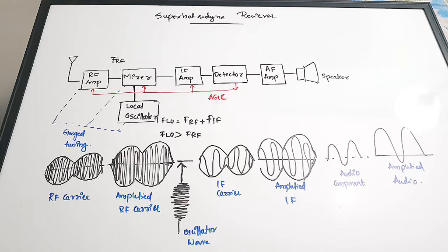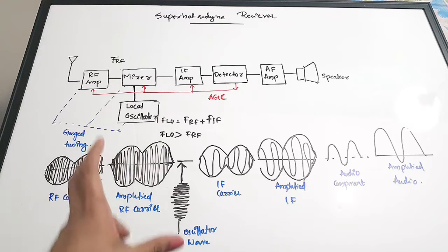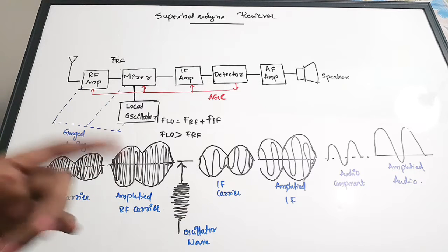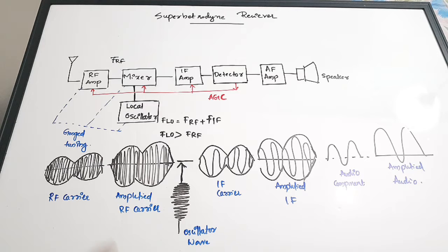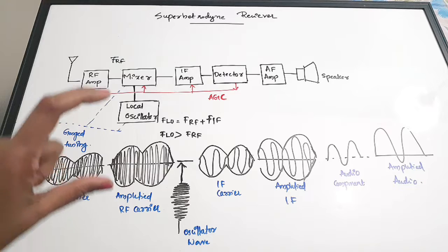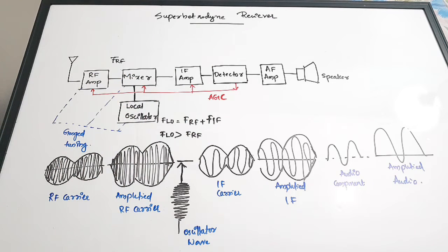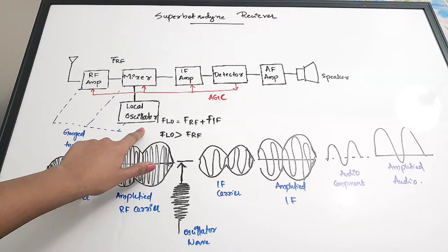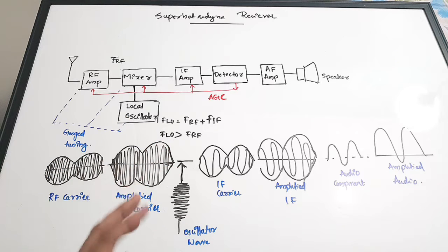In this video we are going to discuss the super heterodyne receiver, which is one of the very commonly used types of receivers in communication systems, having a lot of advantages compared to other receivers. Super heterodyne means the process of converting a higher frequency by combining it with another frequency to form a lower frequency. We take the frequency received through the antenna, combine it with the local oscillator frequency in the mixer, and form a lower frequency.